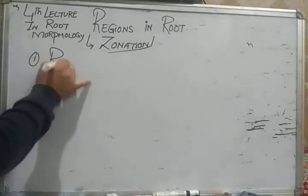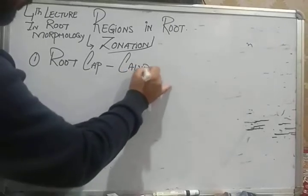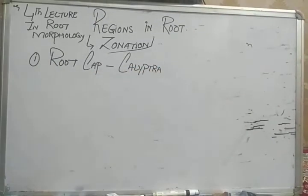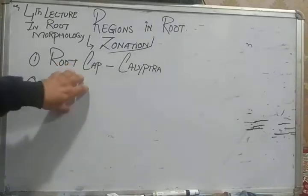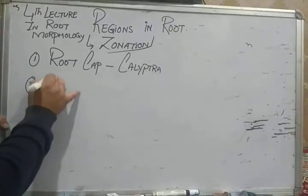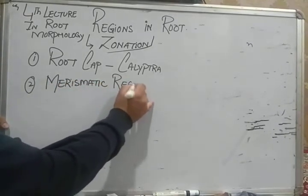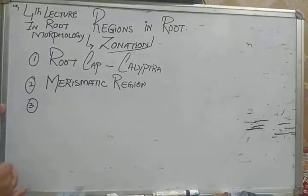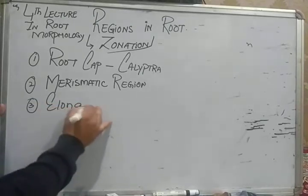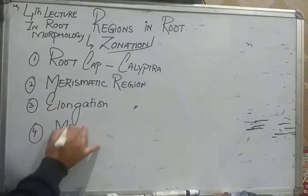Ek root mein kitne regions hote hain - pehle main regions ke naam likhunga. As far as the regions of root are concerned, first one: the first region is called as root cap. Root cap ke baad Meristematic region, uske baad Elongation region.